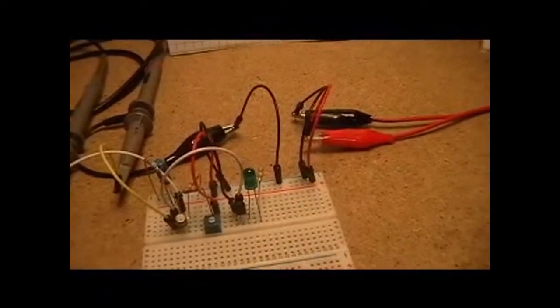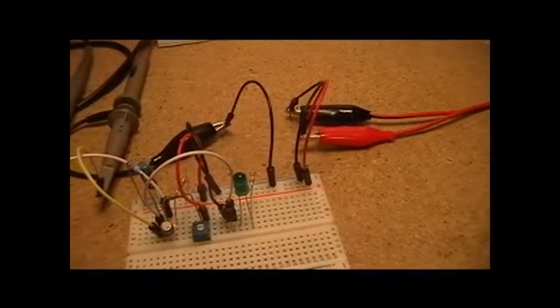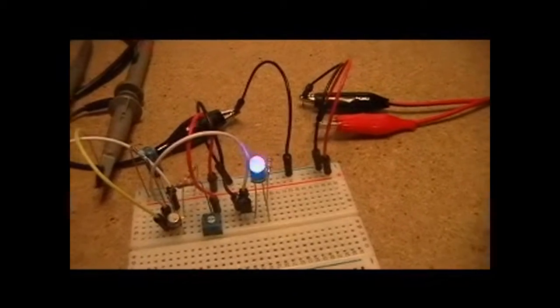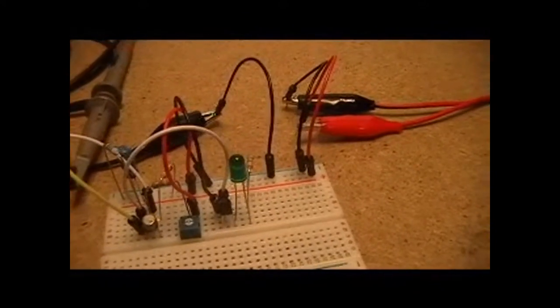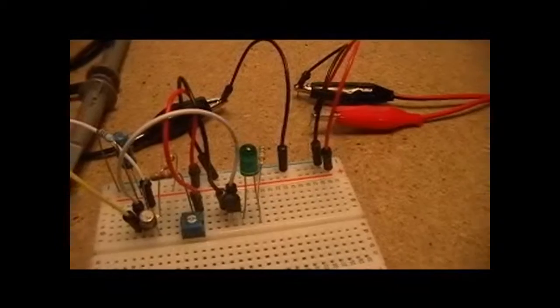So anyway, coming back to our circuit here, and I don't know how this is going to actually show on the camera. It looks like it's flickering and then stopping, but that's not really the case. It's flickering continuously.